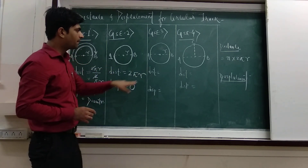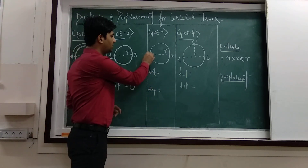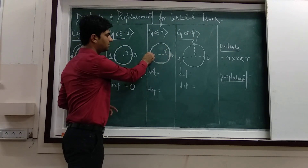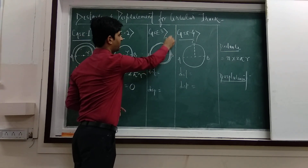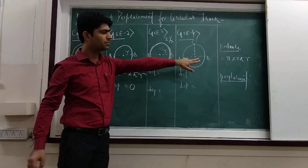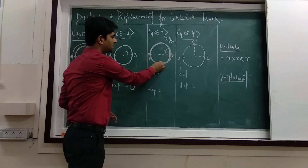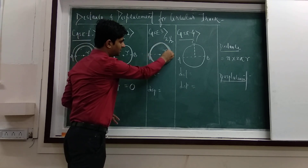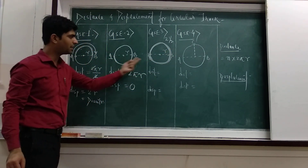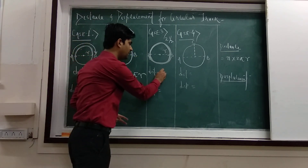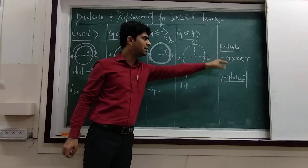Coming to case number 3: suppose the number of revolutions is 2 and a half. We start from point A, complete the first revolution, then the second revolution, then a half revolution — that is 2 and a half revolutions in total. For 2 and a half revolutions, using n into 2πr, that is 2.5 into 2πr. Counting individually: first revolution gives 2πr, second revolution gives 2πr, and the semicircle gives πr. Adding them: 2πr + 2πr + πr = 5πr. And using the formula, 2.5 × 2πr also gives 5πr.